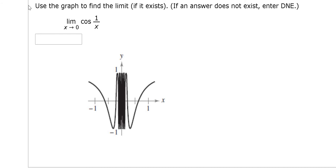Use the graph to find the limit if it exists. If an answer does not exist, enter DNE. So you have the limit as x approaches zero of the cosine of one over x.